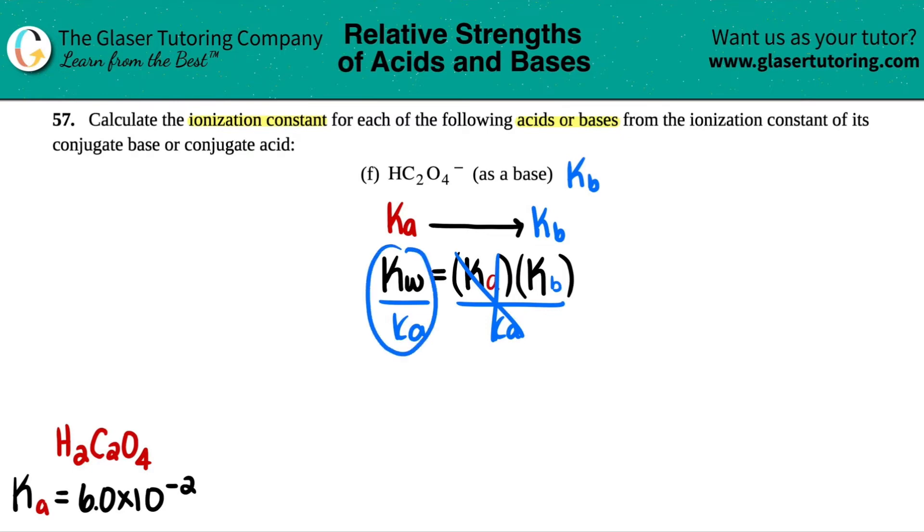And now you have Kw divided by Ka equals Kb. So just for simplicity of the video, I'm just going to do that right now. So we're going to divide